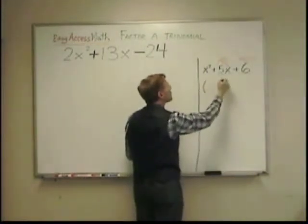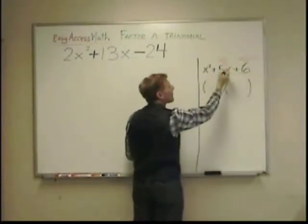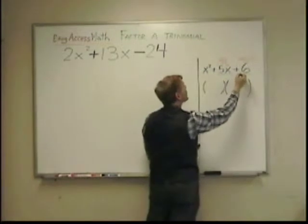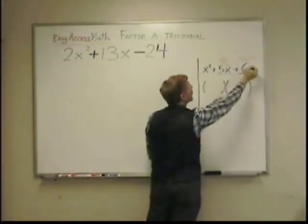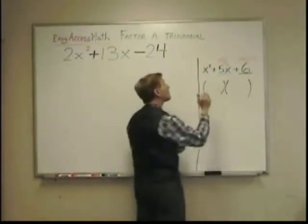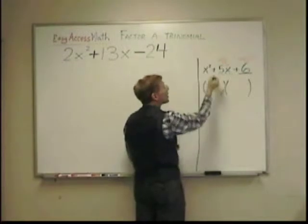I need to find two numbers that add up to this middle number, the number with the x in this case, and multiply to that last number, the plain old number at the end. So, I'm going to look for multiples of that number, that's six. First,